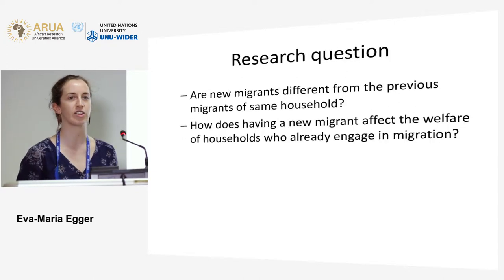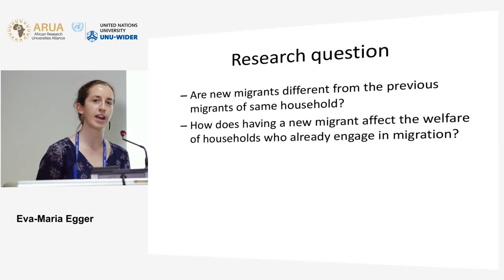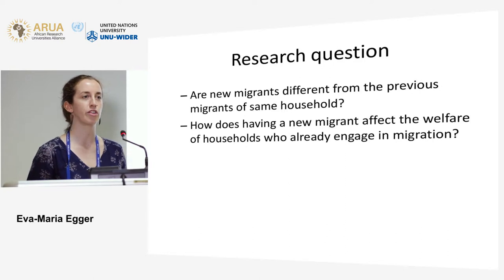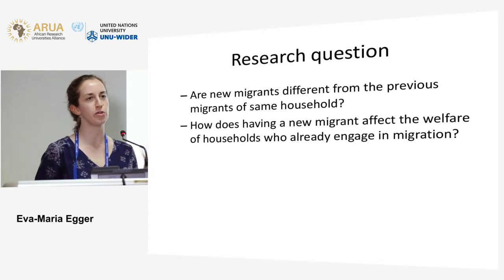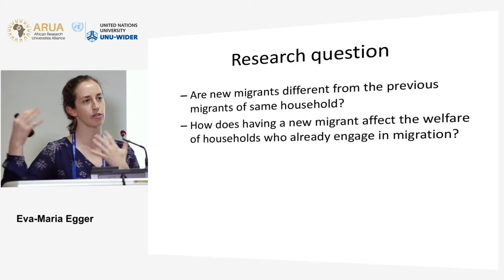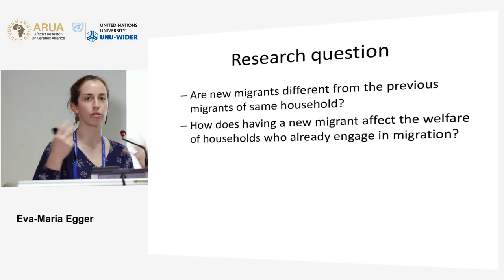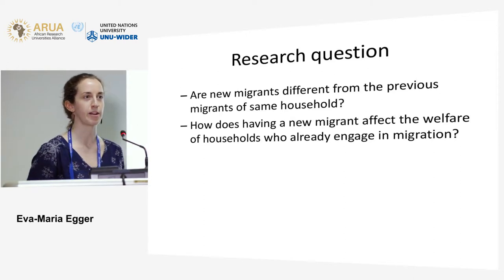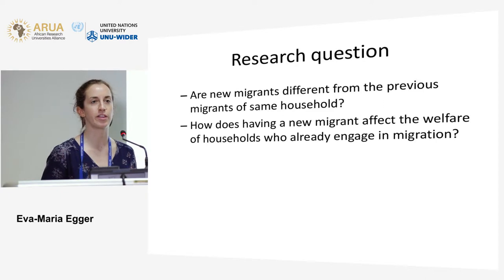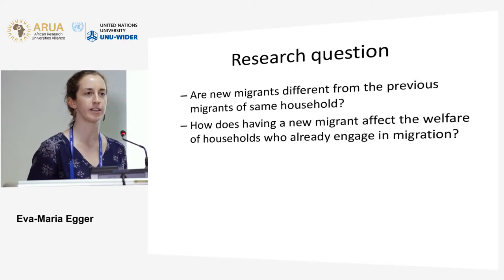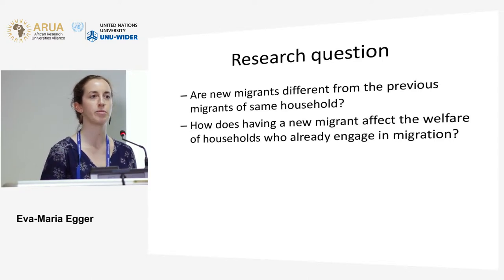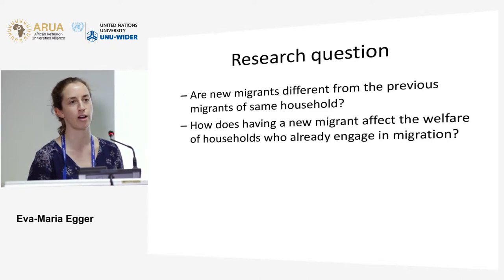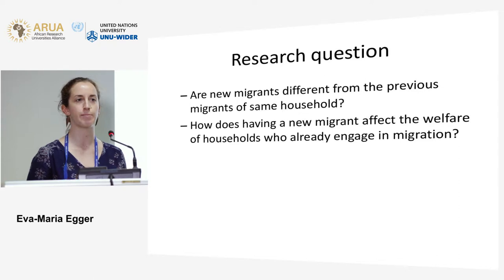The specific questions we answer in the paper are: first, we provide a rich descriptive overview of the characteristics of new migrants — the second-round migrants — compared to the first-round migrants, and the households that have such repeatedly migrating members, to draw conclusions about what could be going on. The second part focuses on an impact assessment of whether having an additional migrant has any effect on the welfare of the household left behind, conditional on already engaging in migration.